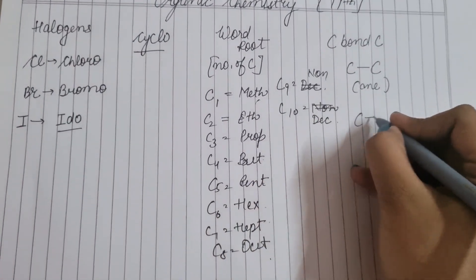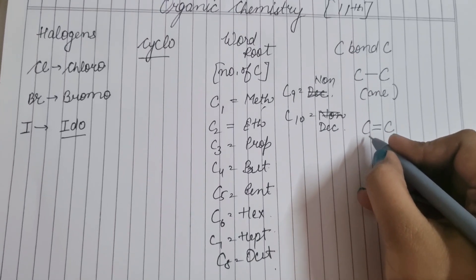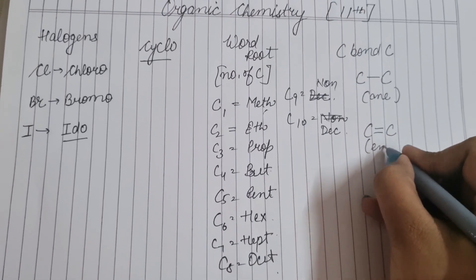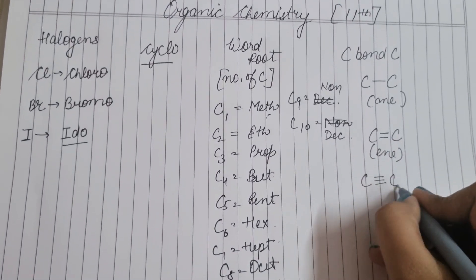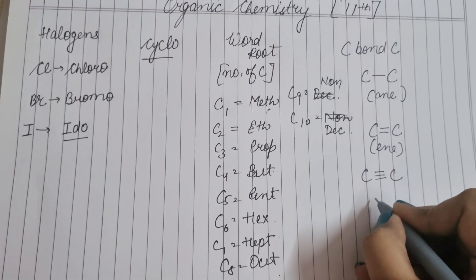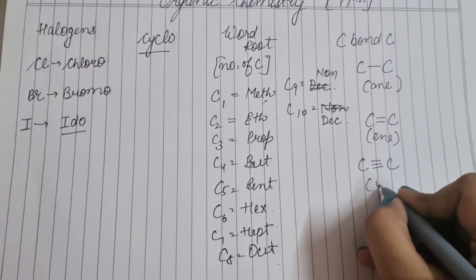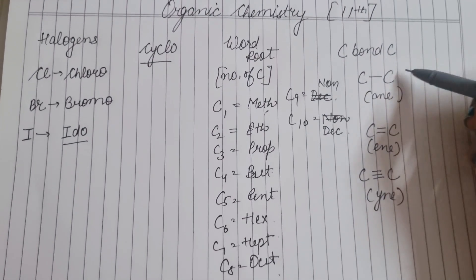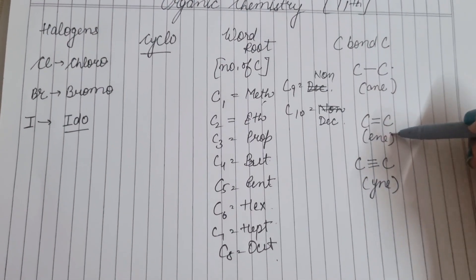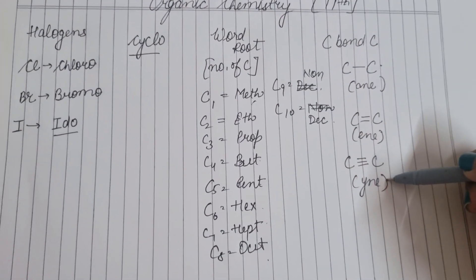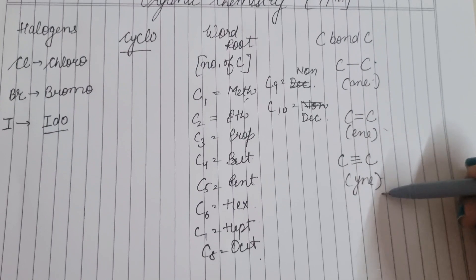उसके बाद, अगर carbon-carbon double bond है, तो उसमें 'ene' लगाना है। और carbon-carbon के बीच में अगर triple bond है, तो 'yne' लगाना है। Single bond के लिए alkane, double bond के लिए alkene, and triple bond के लिए alkyne।